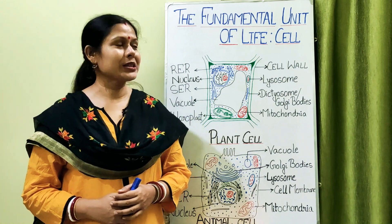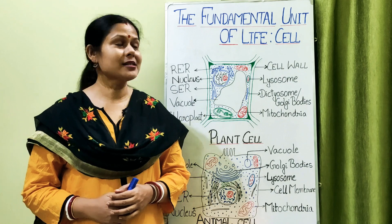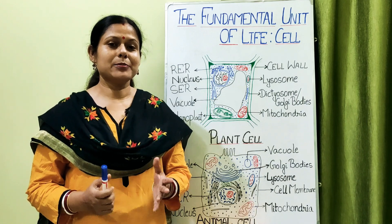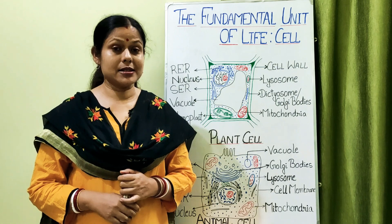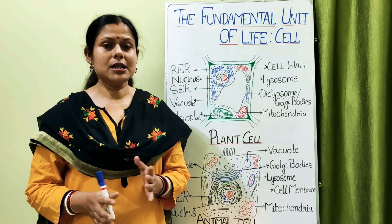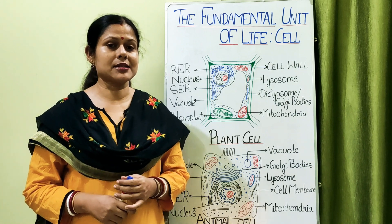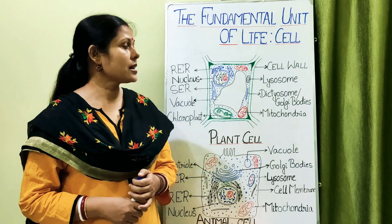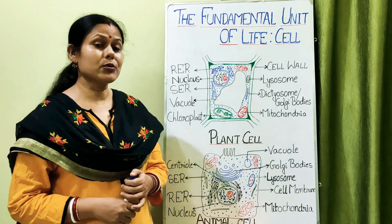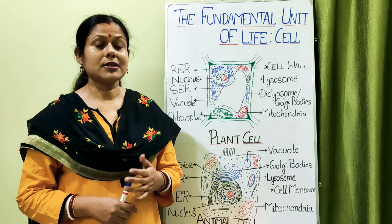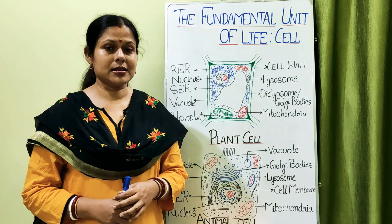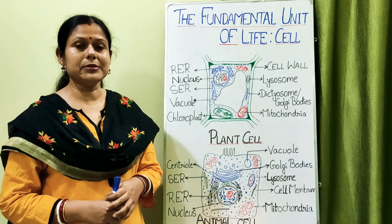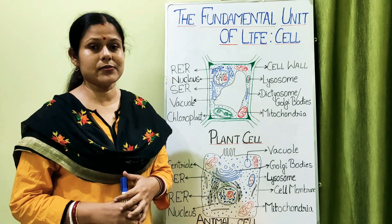Hello everyone, today we are back with our next part of the chapter 'Fundamental Unit of Life: Cell'. In this chapter we have so far studied that a cell is made up of an outer membrane, cytoplasm, and cell organelles. In our previous sections we studied about the outer membranes — the cell wall and cell membrane — their properties, functions, and composition. Today we are going to discuss the various cell organelles found inside a cell, focusing on plant cell and animal cell.